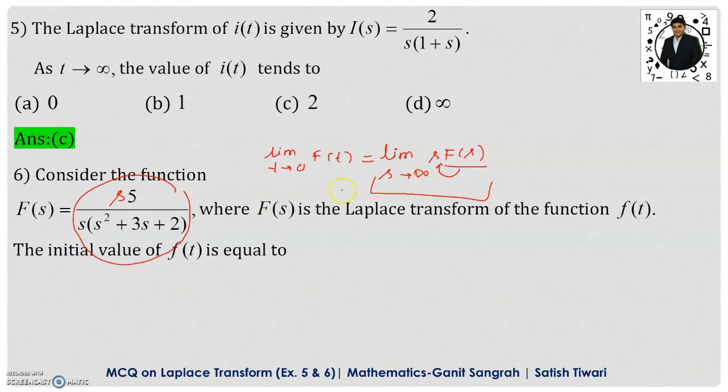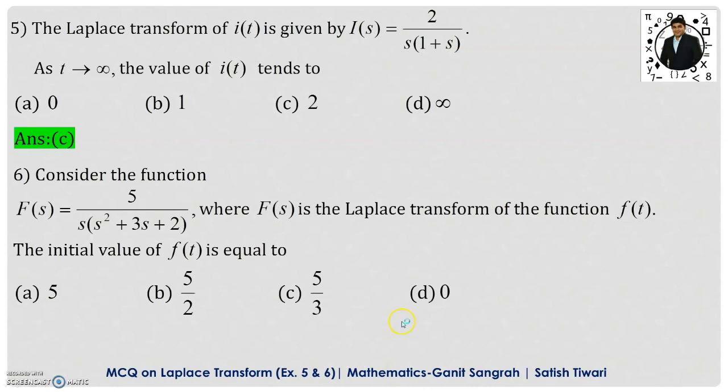Then we take the limit as s tending to infinity. So if you observe here this s will get cancelled, and if I put s as infinity here, this will be infinity, this will be infinity. Infinity plus infinity is infinity plus 2, which is again infinity. So 1 by infinity will tend to 0. Here we will check whether one of the options is 0 or not. Yes, option D is 0 here. So option D is the correct answer.